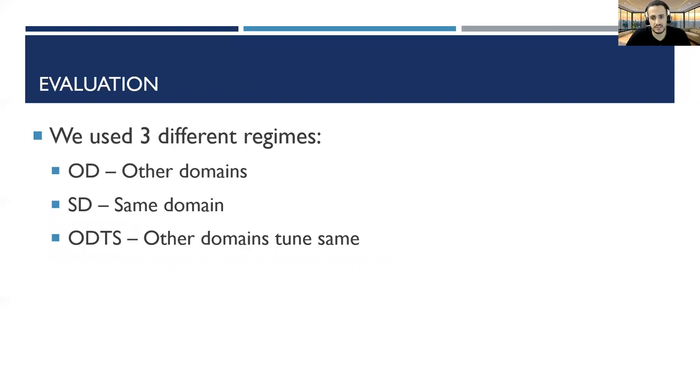SD, same domain. In a scenario where we have data from a specific domain and we want to predict on the same domain, the procedure is we train on half of the data from one domain and test it on the second half.